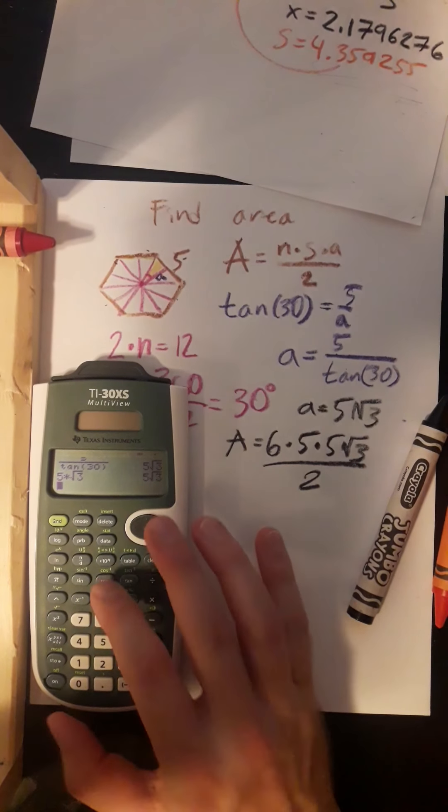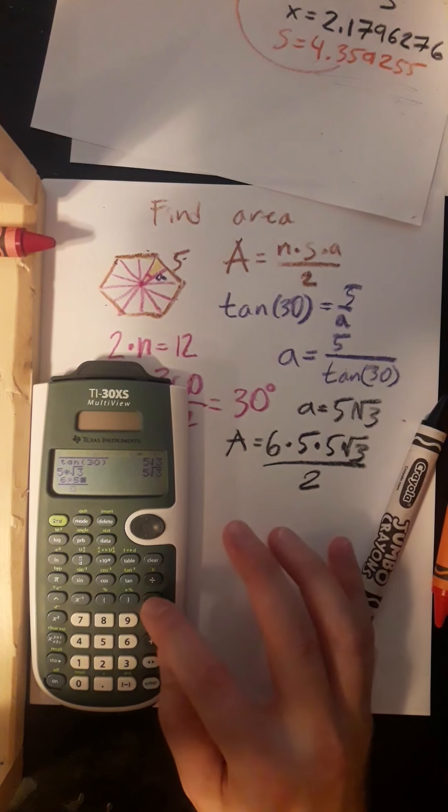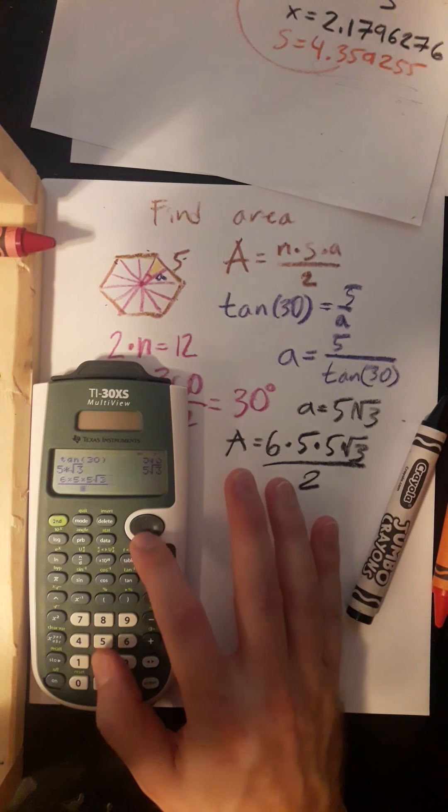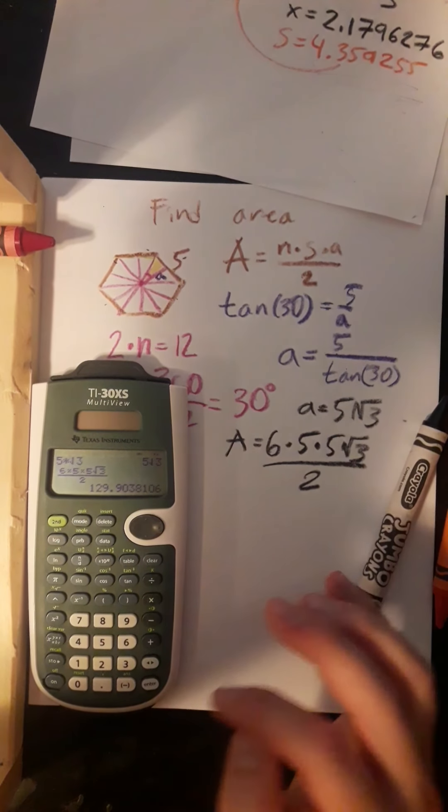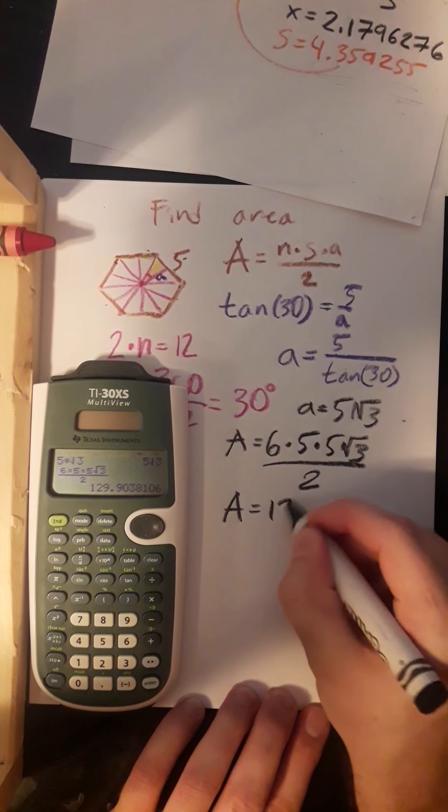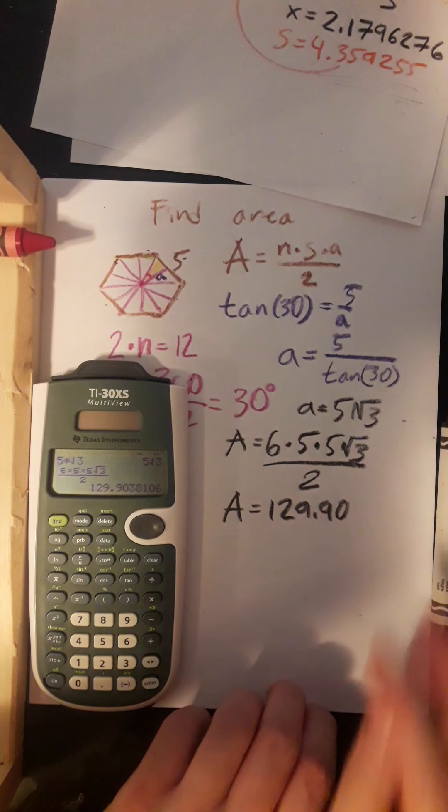Okay, so I'll go ahead and plug that into my calculator. I'll see if it gives me an actual decimal equivalent, or if it's just going to leave it in radical form for us. I have a feeling it might leave it in radical form. Oh, it actually gave it to us as a decimal. Cool. So our area is 129.90.